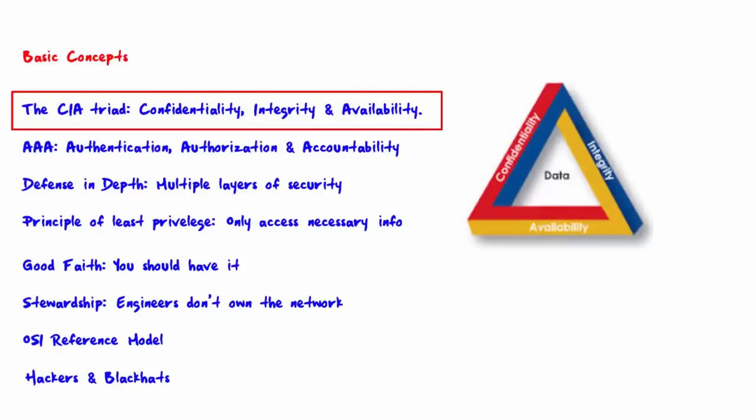In general, all data that you wish to keep secure needs to remain confidential, maintain integrity, and also be available. Confidentiality means simply keeping data secret — secret from those who are not authorized to view it. Integrity means keeping data from being modified by unauthorized people or by accident. And availability means that information is available when you need it.